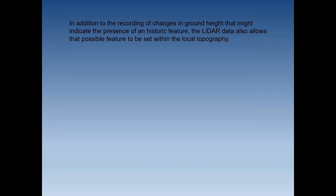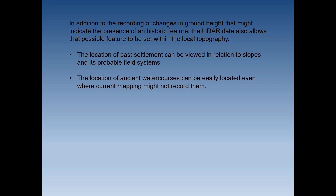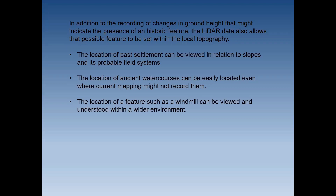In addition to recording changes in ground height indicating historic features, LiDAR allows features to be seen within their local topography. The location of past settlement can be viewed in relation to slopes and probable field systems; ancient water courses can be easily located even where current mapping doesn't record them; and a feature such as a windmill can be viewed and understood within a wider environment. For an area of ancient woodland we might ask why that woodland was established where it was.